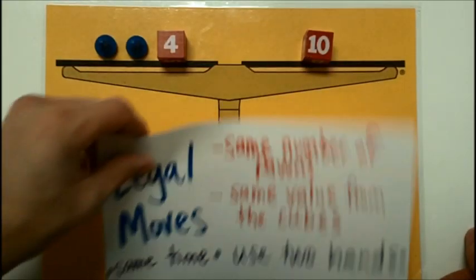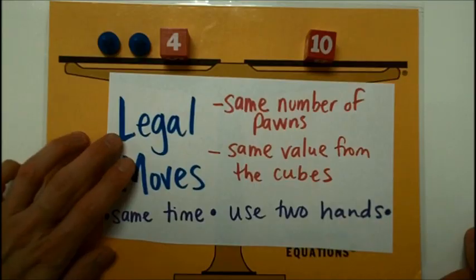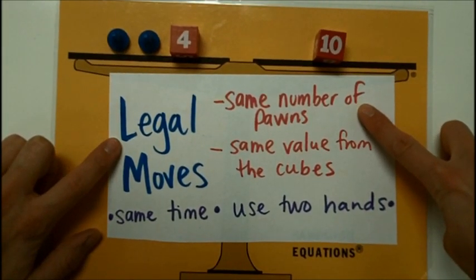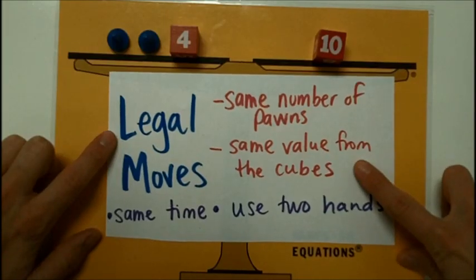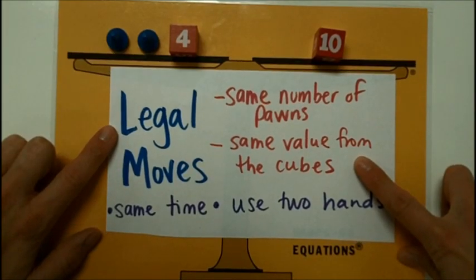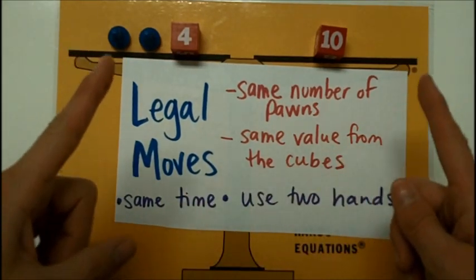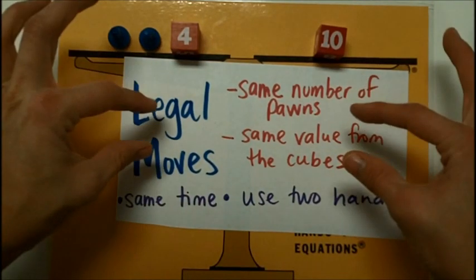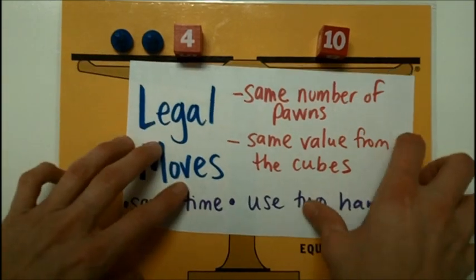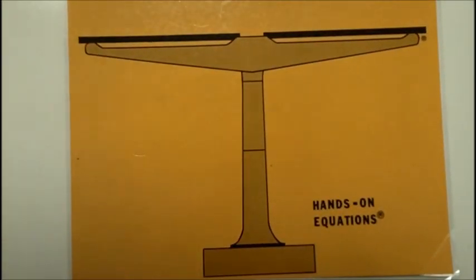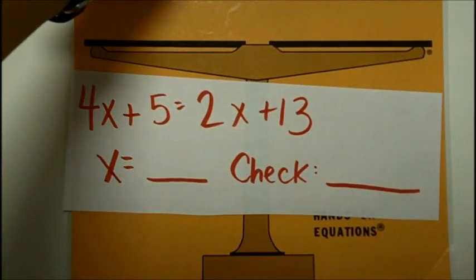So from this example, we can see that there are two kinds of legal moves. Like we learned in lesson 3, we can take away the same number of pawns, but another legal move is to take away the same value from the cubes. Each time, remember to take away something from both sides at the same time, and always remember to use two hands as you remove them. So let's try together three examples as we practice both kinds of legal moves.